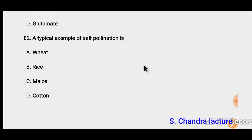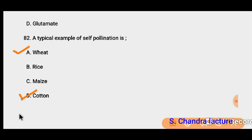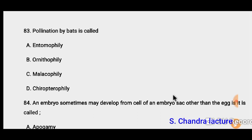Question 82: A typical example of self-pollination. Self-pollination occurs in wheat, barley, oat, tomato, potato, apricot, cotton, carrot and rice. The options here are confusing since wheat, cotton, and rice are all present — this may be a star question with no single clear answer. Question 83: Pollination by bats is called chiropterophily.